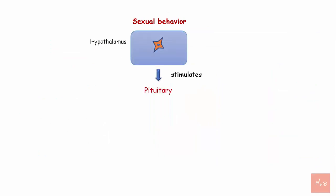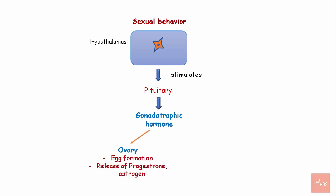Sexual behavior. The hypothalamus controls sexual behavior. It stimulates the pituitary gland to secrete gonadotropic hormones. In females, it has a regulatory effect on the ovaries and is involved in egg formation and release of progesterone and estrogen. In males, gonadotropins influence the testes to release testosterone.